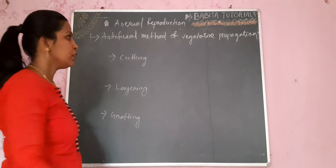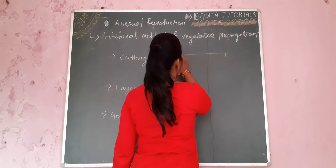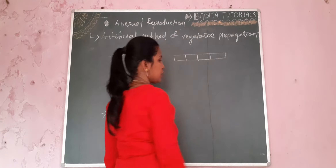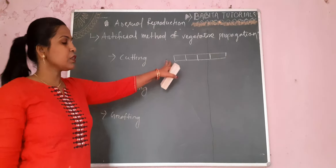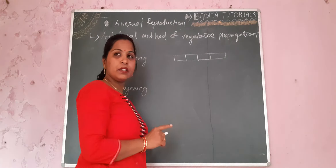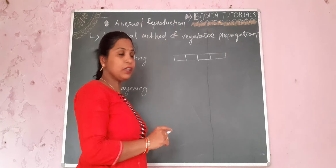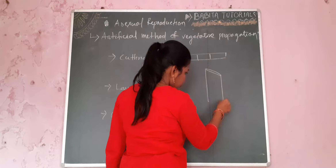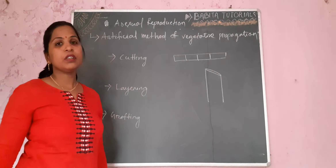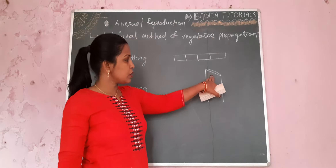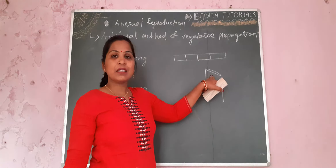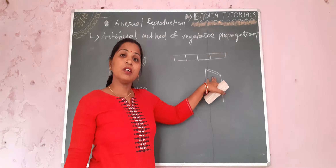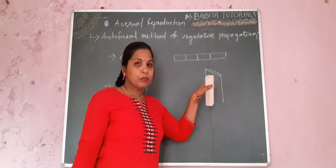In the case of cutting, suppose this is the stem. We know that a stem has nodes and internodes. When we take a part of the stem, it should be an oblique cut. It should be an oblique cut because when it is cut at an oblique angle, it causes less damage to the tissue and the maximum area will be covered with the soil.